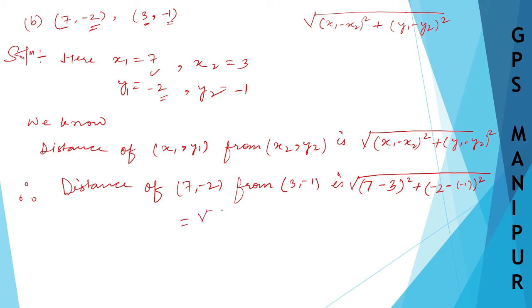which will be root over (7 minus 3), that is 4 squared, plus (-2 minus -1), that is -1 squared. Same thing.